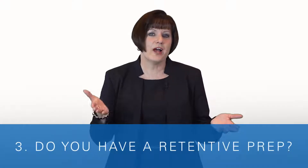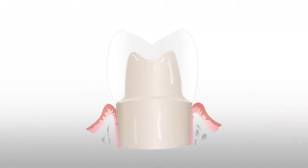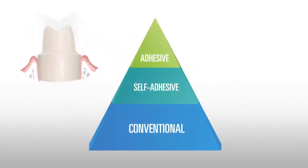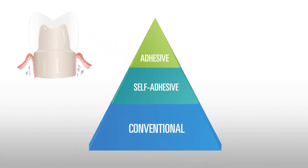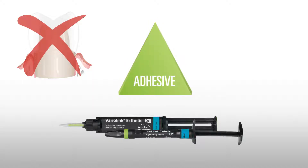The final question, number three: the tooth. We can't forget about the tooth. Do you have a retentive prep? You need to have a minimum of 4 millimeters in height and a 4 to 8 degree taper to qualify as retentive. If you have retention and proper reduction, you can use any of the cement categories. If you don't have retention, then you must adhesively bond in that restoration.